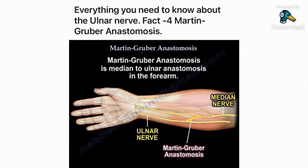Fact number four is the Martin-Gruber anastomosis. There are anomalies that can happen between the median nerve and the ulnar nerve. These can confuse the clinical picture and the EMG findings.